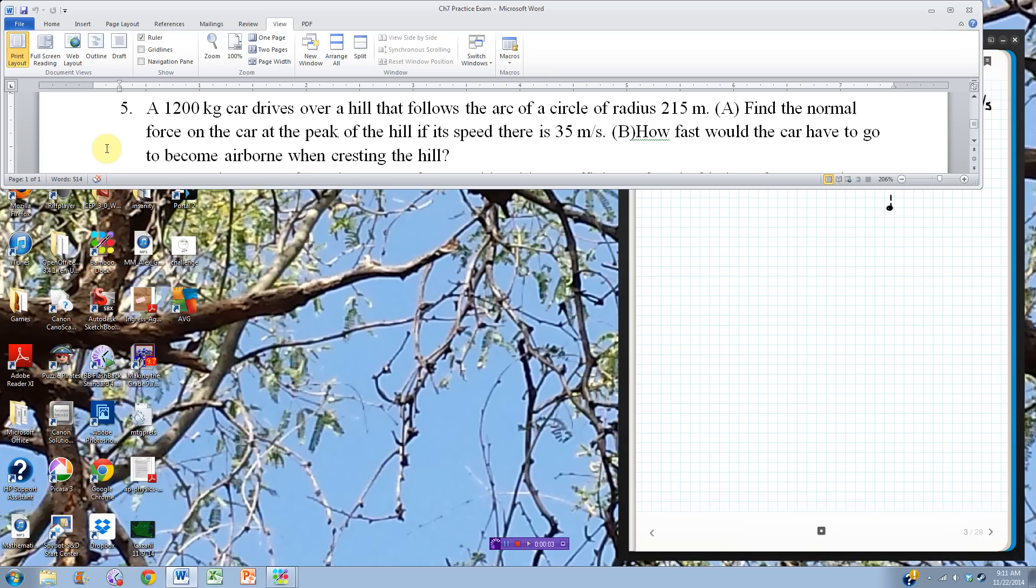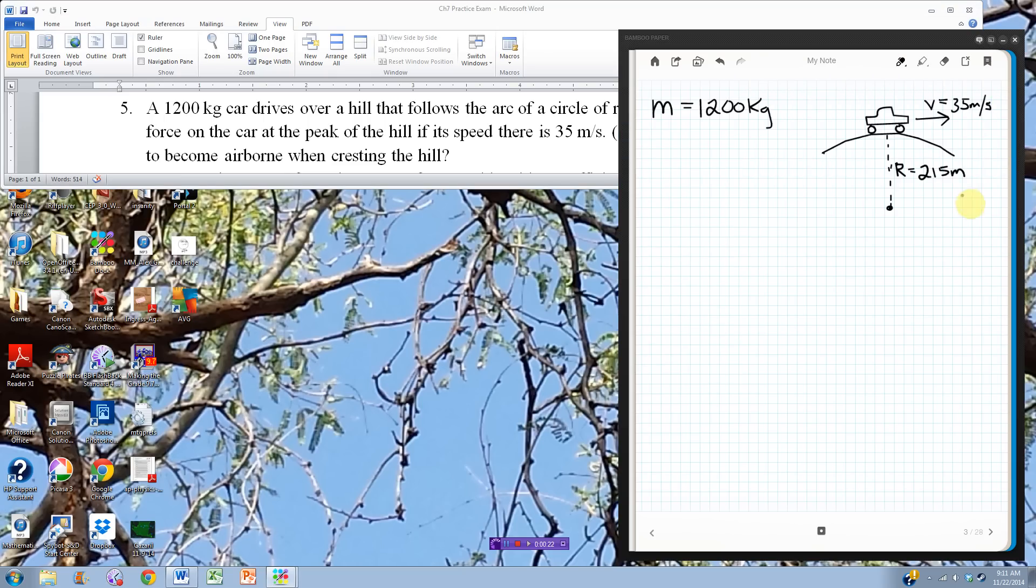This is the practice test for chapter 7, number 5. A 1200 kilogram car drives over a hill that follows the arc of a circle of radius 215 meters. I want to find the normal force on the car at the peak of the hill if its speed there is 35 meters per second, and then find out how fast the car would have to go to become airborne when cresting the hill.